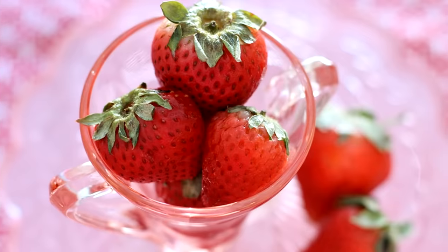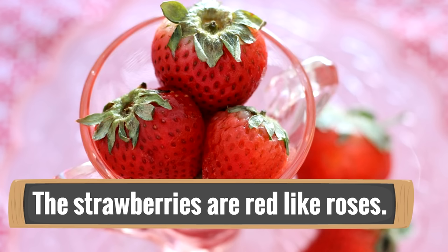Look at this simile: the strawberries are red like roses. We know that this is a simile because it is a comparison — notice the word 'like.' The word 'like,' when it's in a comparison, tells us that it is a simile. The strawberries are being compared to the roses, and what do the strawberries have in common with the roses? They're both red. The strawberries are red like the roses. This is a simile.